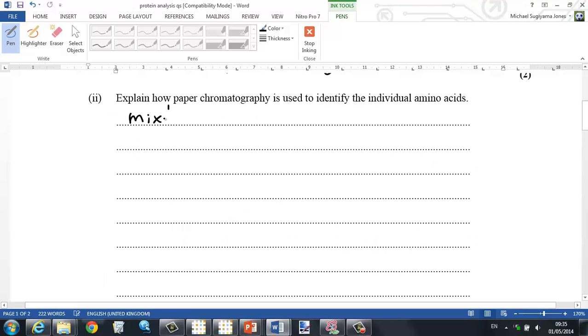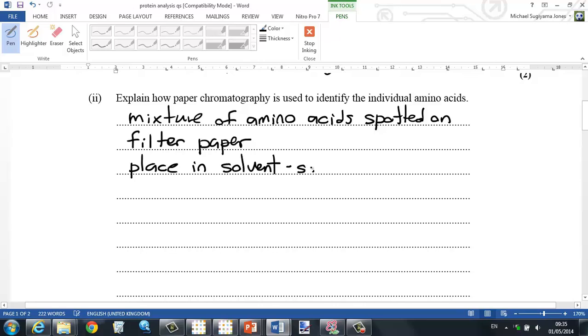The next question is explain how paper chromatography can be used to identify individual amino acids. First you spot the mixture of amino acids on filter paper or chromatographic paper. Then you place in a solvent which will rise up the paper.